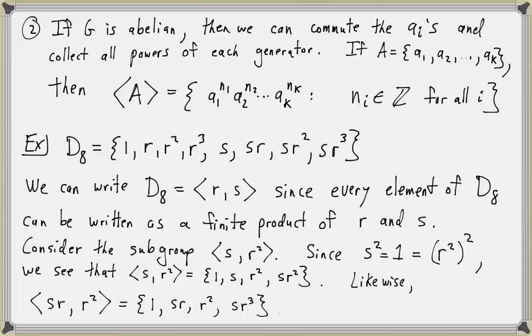In general, if you're going to list out the elements of a subgroup generated by two or more elements, you can just take the product of the generators together and see what other elements you come up with.